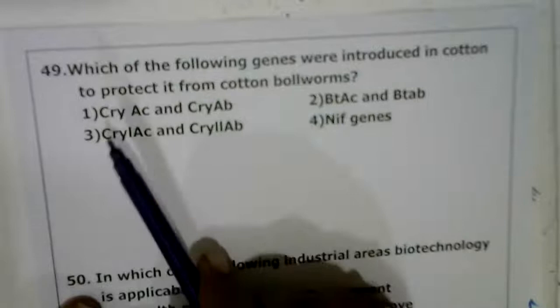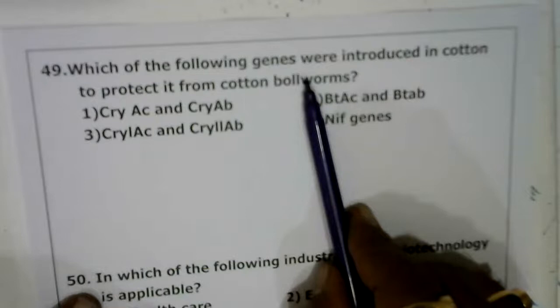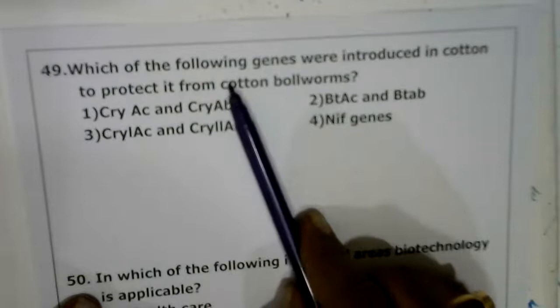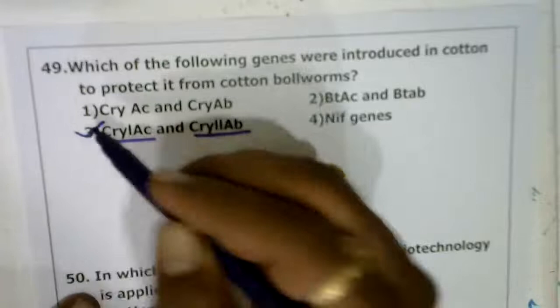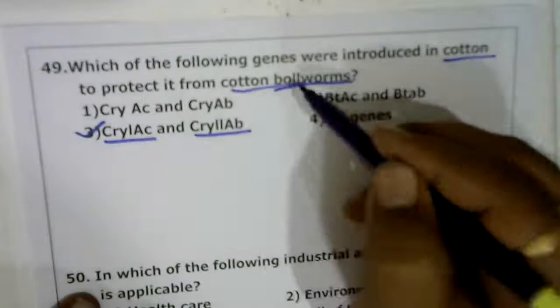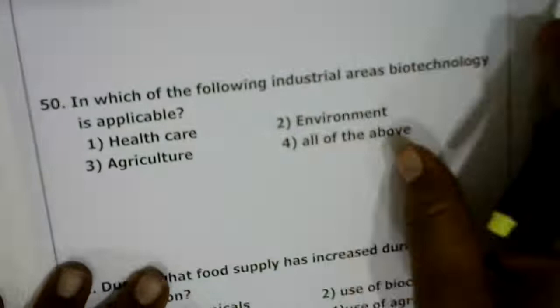Next: which genes were introduced in cotton to protect from cotton boll worms? The answer is cry1AC and cry2AB. The NIF gene, by contrast, is called the nitrogen-fixing gene.